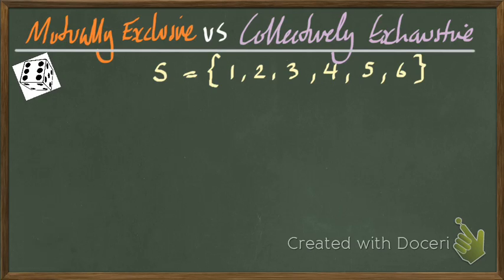So our old friend the die turns up again, and I've just written down what the sample space can be: one, two, three, four, five, six. Those are all of the possible outcomes. And the first thing I'm going to look at them is we just roll the dice.